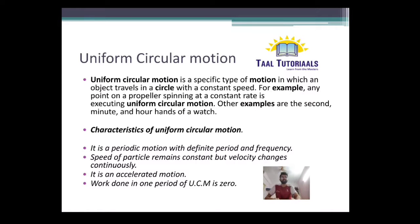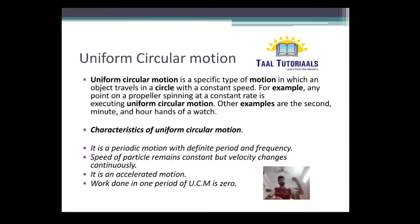The last topic we are sharing is uniform circular motion. It is a specific type of motion in which an object travels in a circle with a constant speed. For example, any point of a propeller spinning at a constant rate is executing uniform circular motion. Other examples are the second, minute, and hour hands of a watch. The change in velocity which sometimes happens is due to a change in magnitude or direction of the motion.